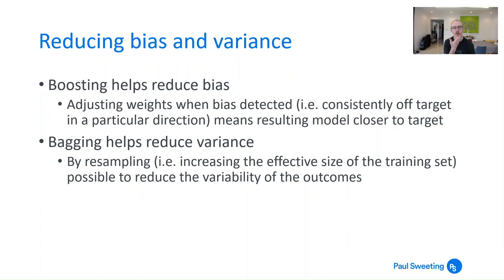And this is a useful way of thinking about it because boosting is something which helps reduce bias. Because when bias is detected in the model, the weights are adjusted to try to compensate for that. So if you're consistently off target in a particular direction, then boosting should help nudge your model closer to target. So it should mean that your classifiers get better at the job they're supposed to do.